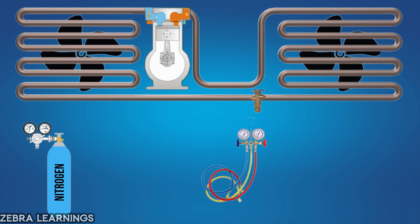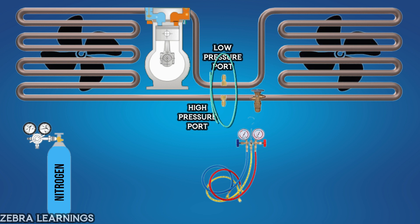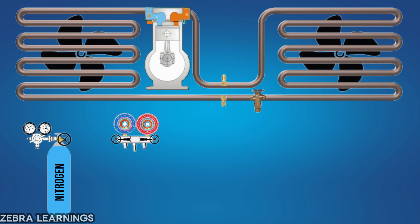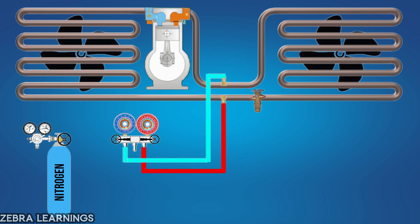If the outdoor unit has connecting ports on both the low pressure and high pressure lines, connect the blue hose to the low pressure line and the red hose to the high pressure line. However, if there is only a connecting port on the low pressure line, then connect only the blue hose to the low pressure line. After connecting the blue and red hoses, connect the yellow hose to the outlet of the regulator.